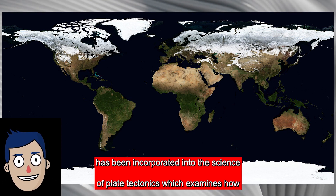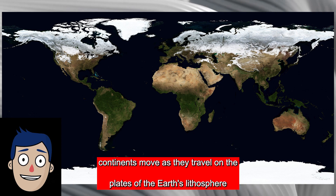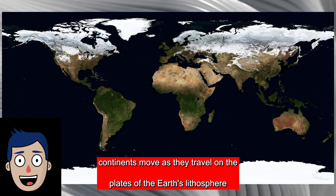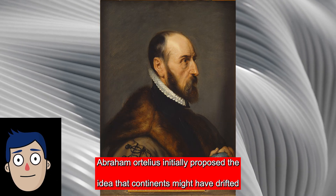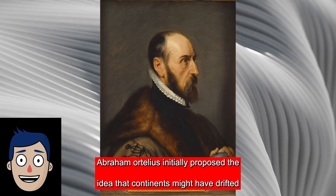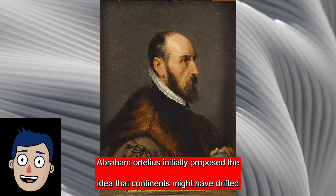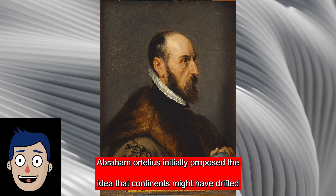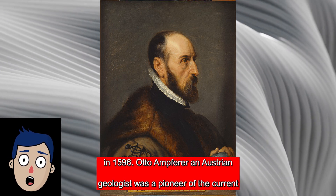Plate tectonics examines how continents move as they travel on the plates of the Earth's lithosphere. Abraham Ortelius initially proposed the idea that continents might have drifted in 1596.